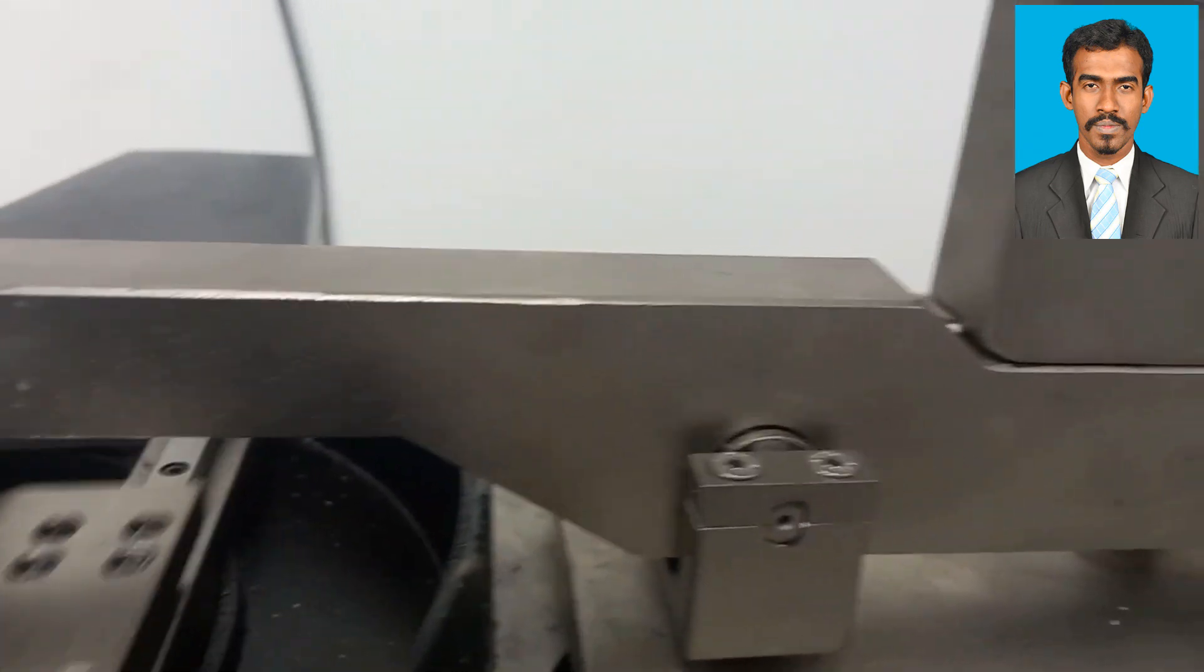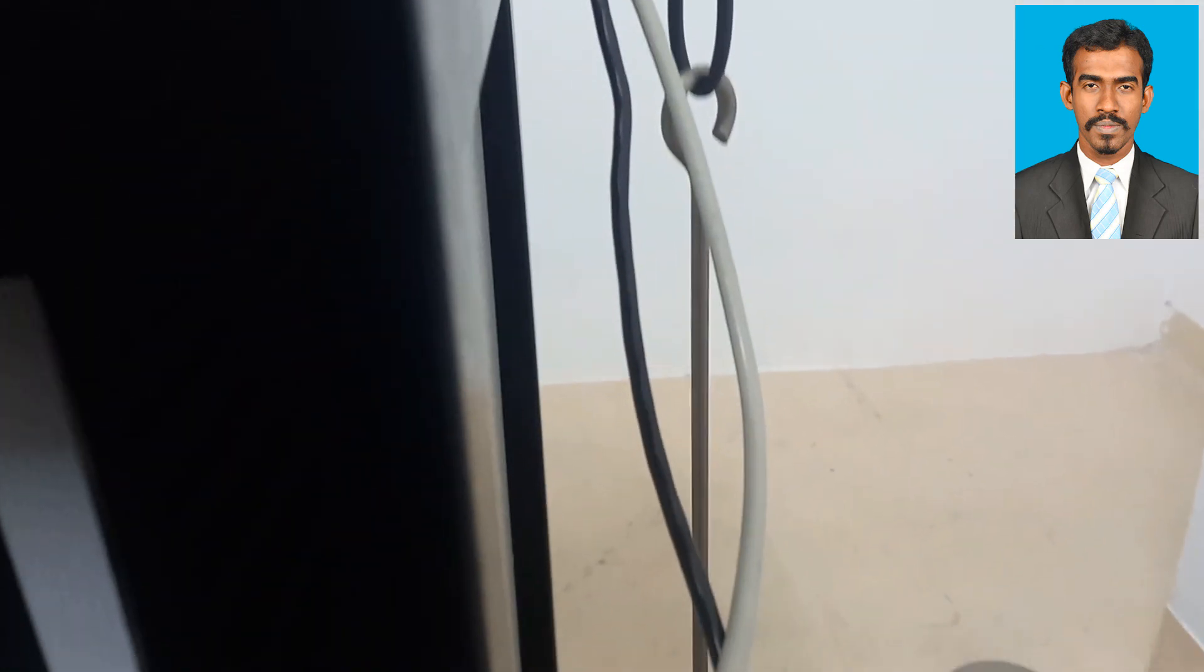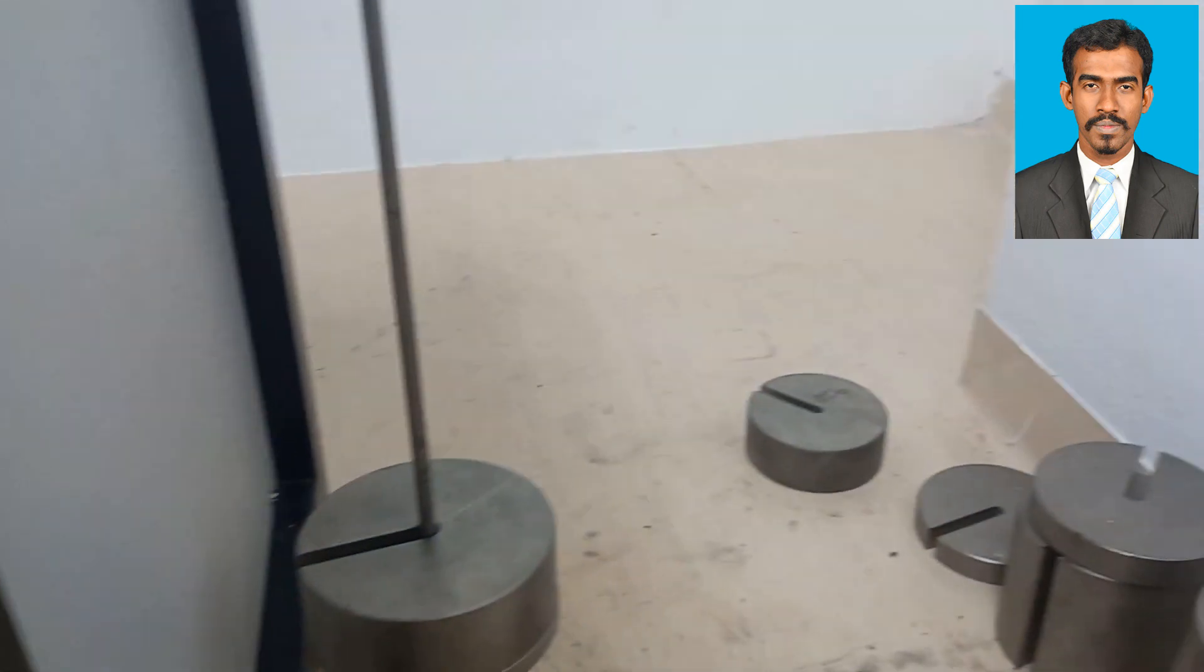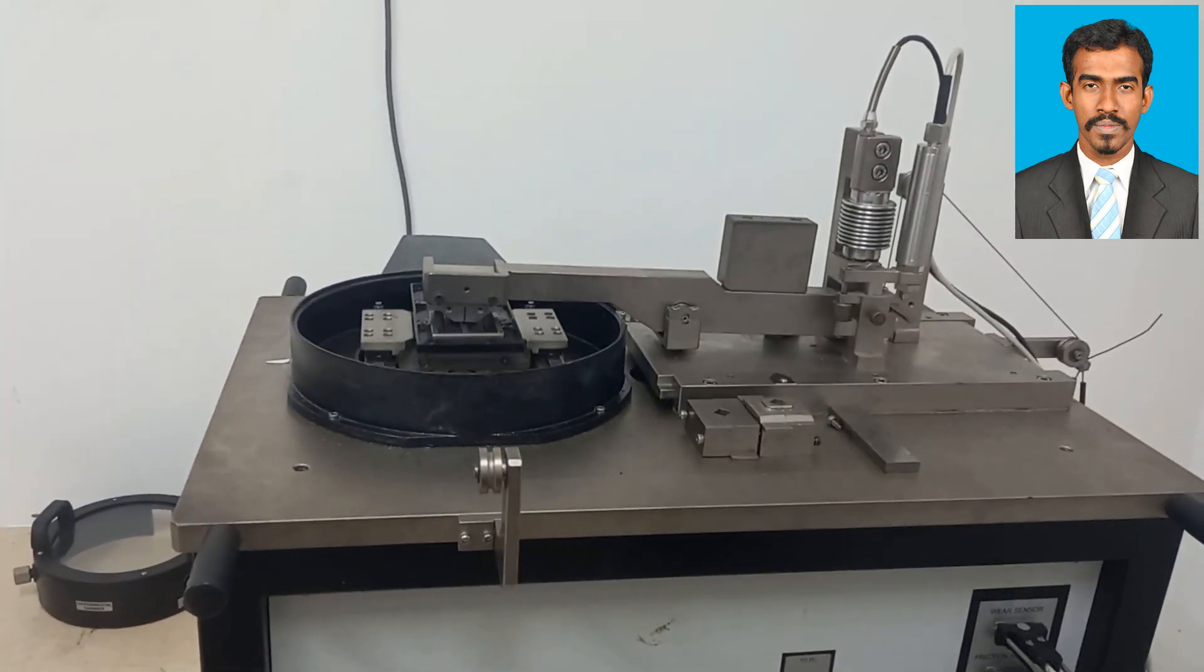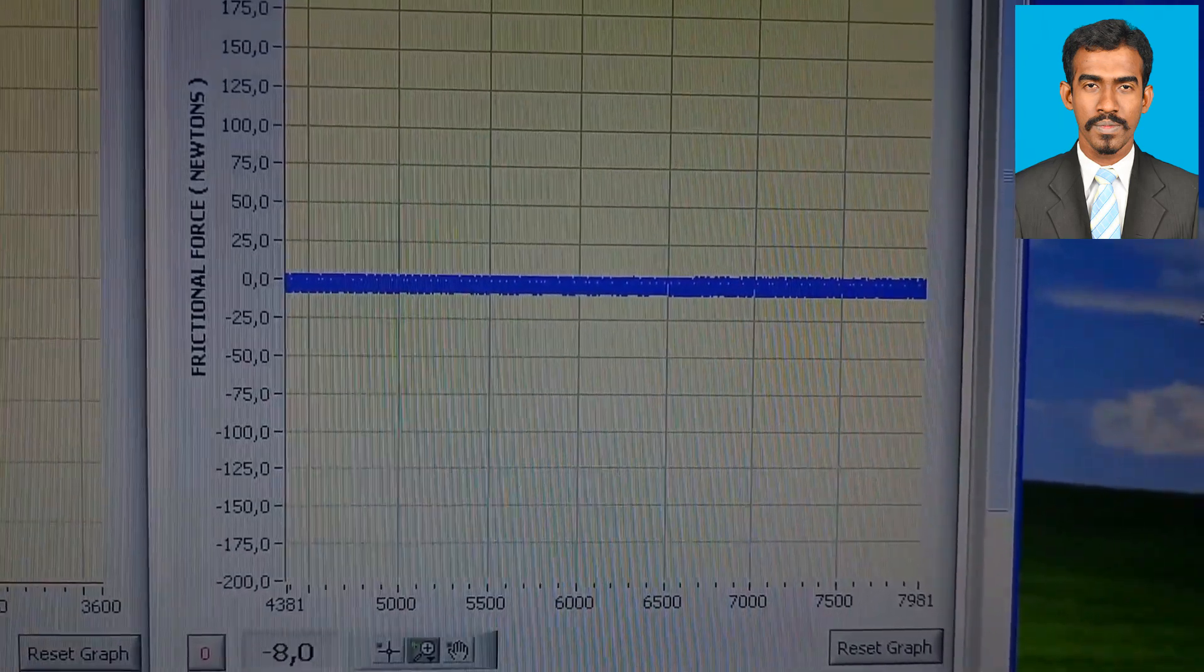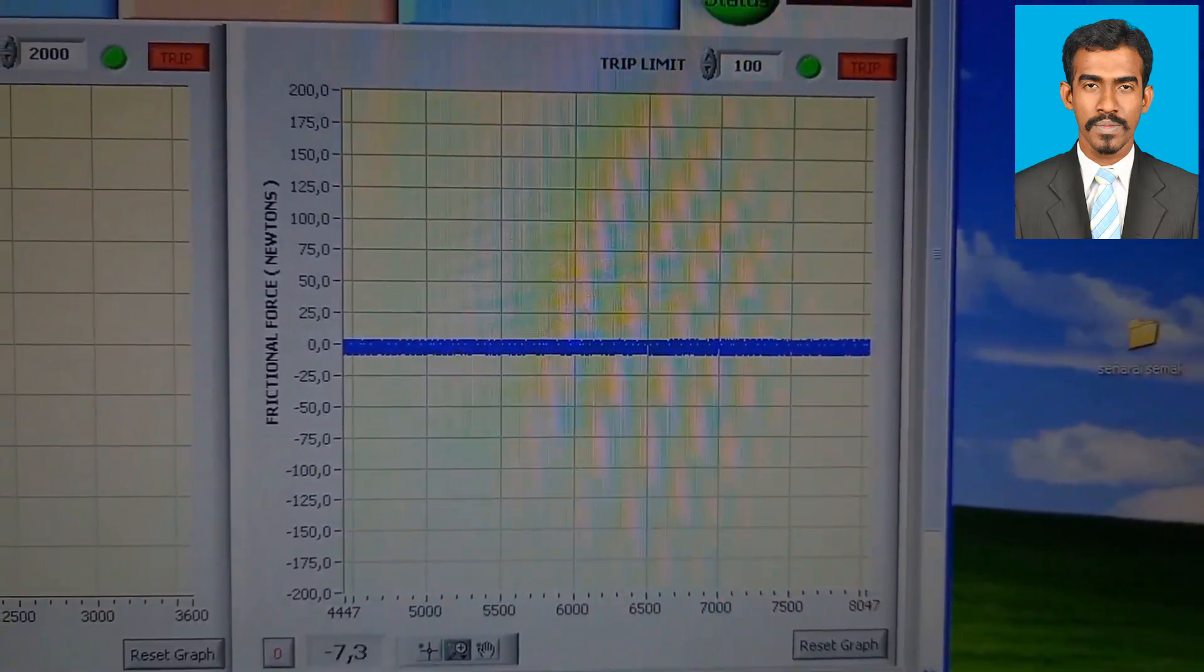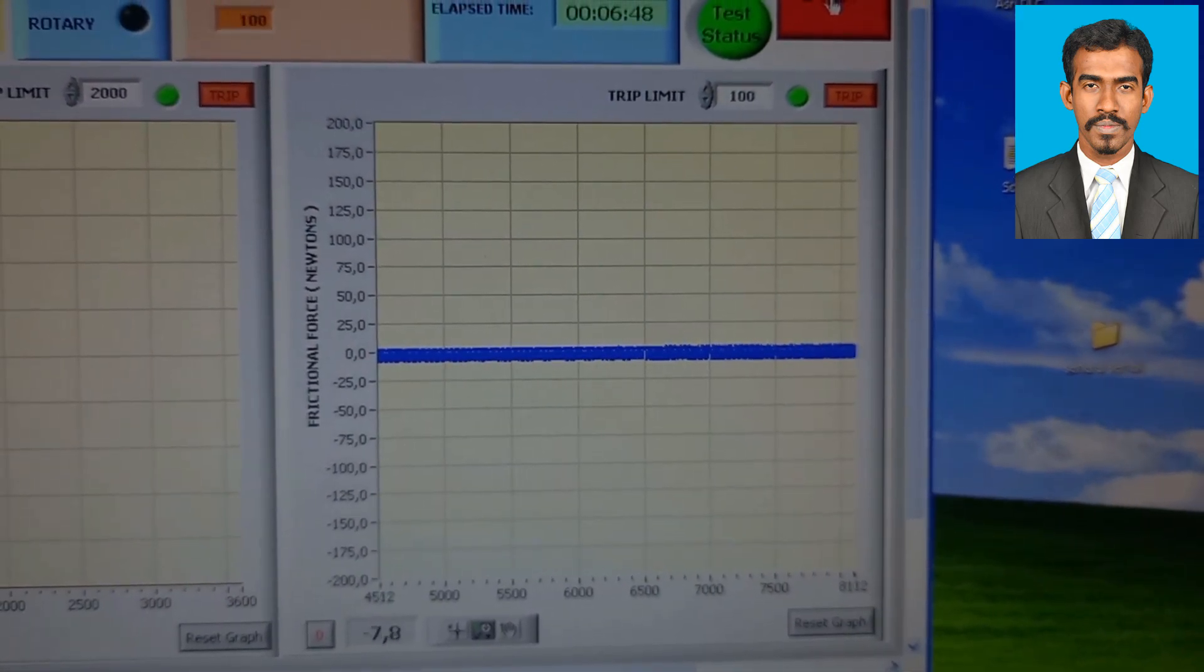Here my experiment is reciprocating, so it's moving back and forth. When the machine is running, we can observe the graph. Since I applied 2.5 kilos, friction should be below 25 Newtons. We can check with the graph. If it is above 25 Newtons, then there is something wrong - either extra vibration or the alignment with the specimen and the ball.